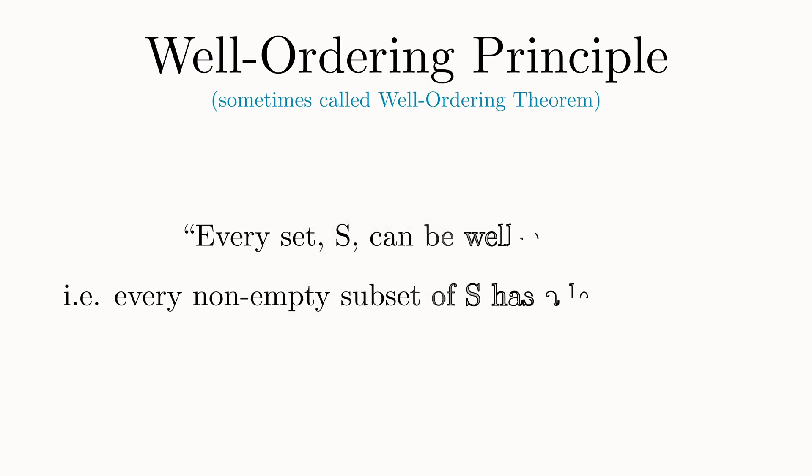The well-ordering principle states that every set can be well-ordered. That is, for a given set S, any non-empty subset must have a least element. As time passed, Cantor came to believe that the well-ordering principle should be derived from more basic principles as well. And he even attempted to find his own proof of it, but failed to do so.